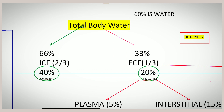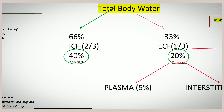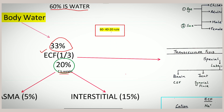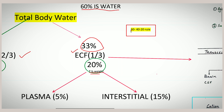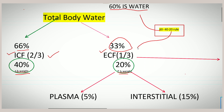Out of 100 percent of the body, 60 percent is made up of water. Total body water is divided into two compartments: the intracellular compartment (ICF) and the extracellular compartment (ECF). ICF accounts for 66 percent — two-thirds of the whole volume — and ECF accounts for 33 percent, one-third. ECF contains 20 percent of total body weight and ICF contains 40 percent. Remember this with the 60-40-20 rule: 60% is water, 40% is ICF, and 20% is ECF.